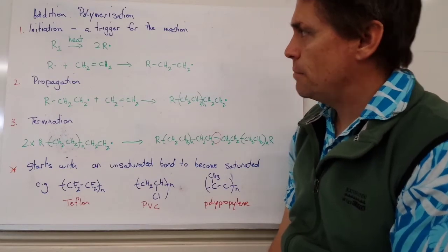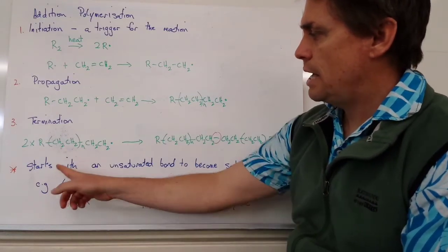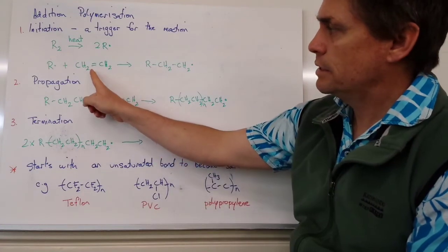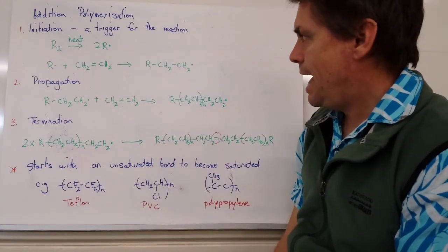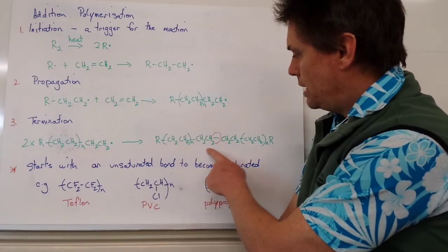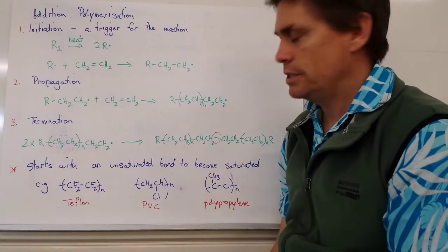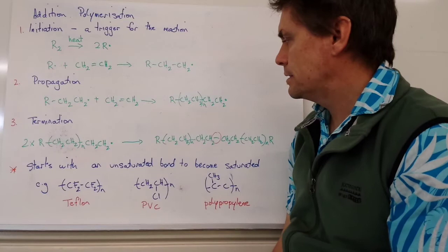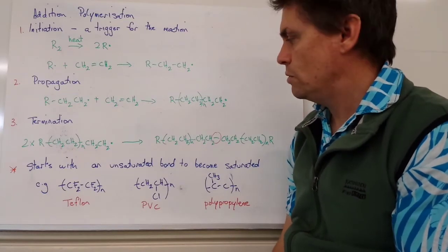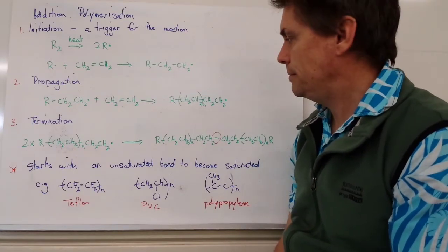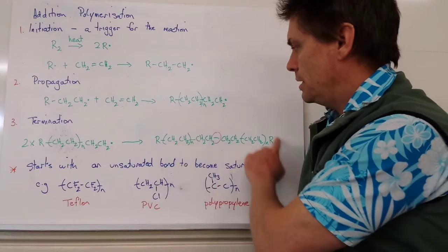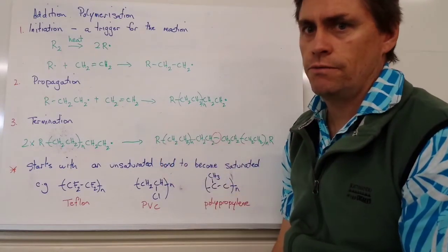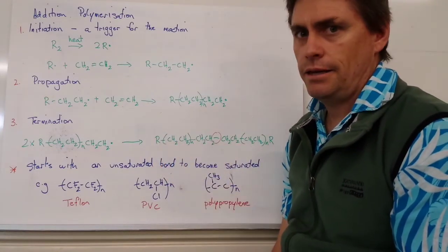So if we just summarize this process, we start with an unsaturated bond. In this case, I've got my ethene. And ultimately, we get all saturated bonds in the process. Because we've got an R group at either end, it's not going to be reactive anymore, or not going to readily react with anything. Now, this polymer unit can be hundreds of thousands of monomers in length.